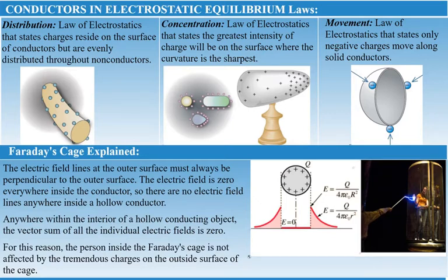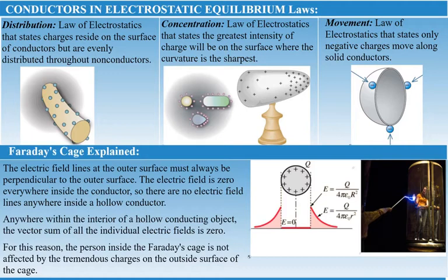All charges reside on the surface. Just outside a conductor, electric field lines are perpendicular to its surface, ending or beginning on charges on the surface. If the conductor is positively charged, field lines go away from the surface; if negatively charged, field lines come toward the surface. Any excess charge resides entirely on the surface — there is no charge and no electric field inside the conductor.